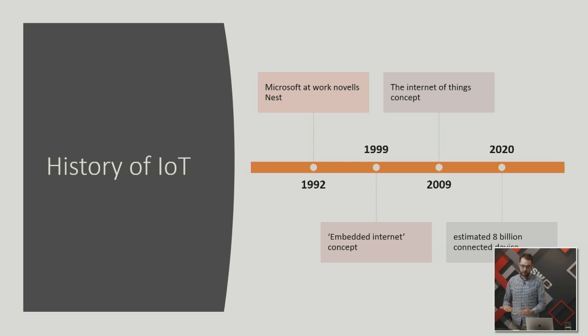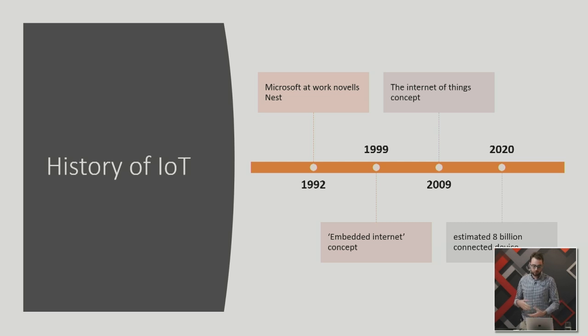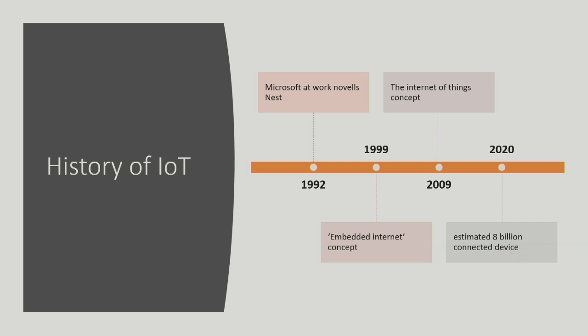Looking back at a small bit of history of IoT - people put it back to around 1992, with Microsoft at work connecting stuff to the internet. Then this idea from 1999 popped up called the embedded internet, and that was really where the concept of IoT came from. Then it changed name in 2009 to the Internet of Things. By 2020, we're expected to have up to 8 billion connected devices - about the same as the number of people in the world. That's one IoT device per person, which is absolutely staggering. This is why I love this space - the numbers are just exponential.